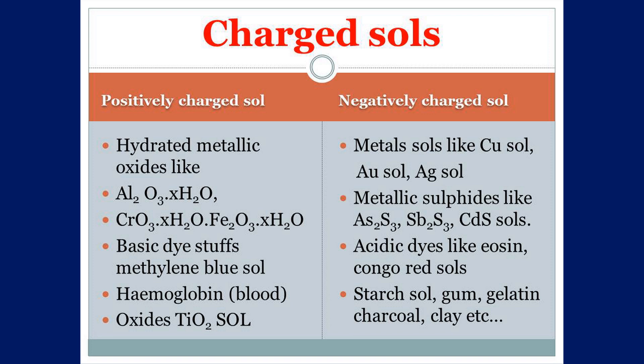Examples of negatively charged colloids are metallic salts like copper salt, gold salt, and silver salt. Metallic sulphides also come in this category. Acidic dyes like eosin and congo red are also examples of negatively charged colloids.